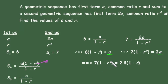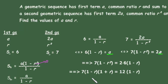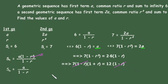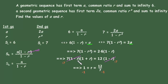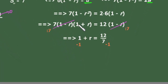We recognize that (1 minus r squared) is a perfect square difference, so we expand it as (1 minus r)(1 plus r). This gives us 7(1 minus r)(1 plus r) = 12(1 minus r). The factor (1 minus r) cancels from both sides.